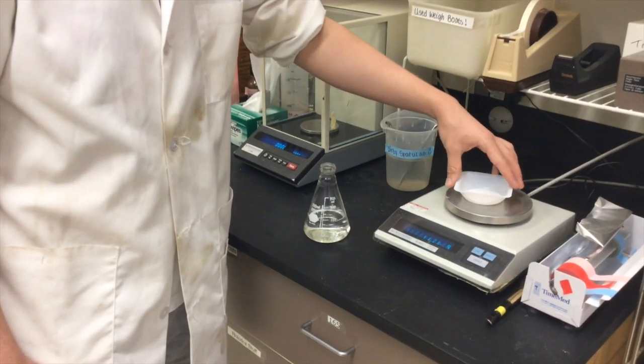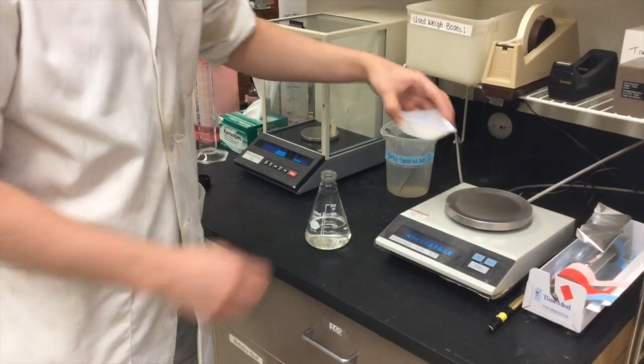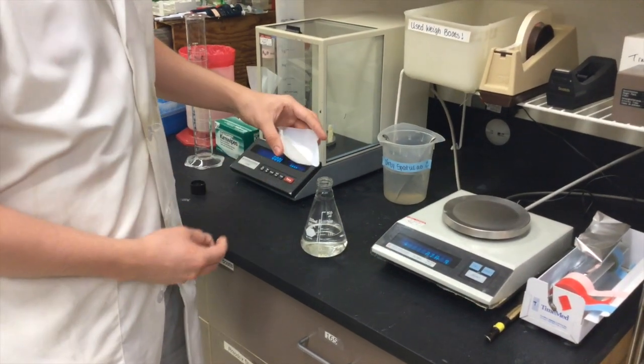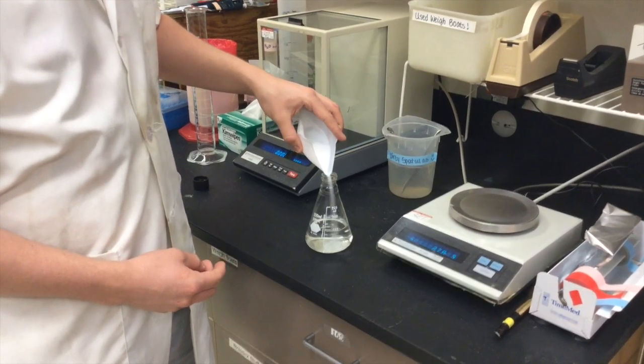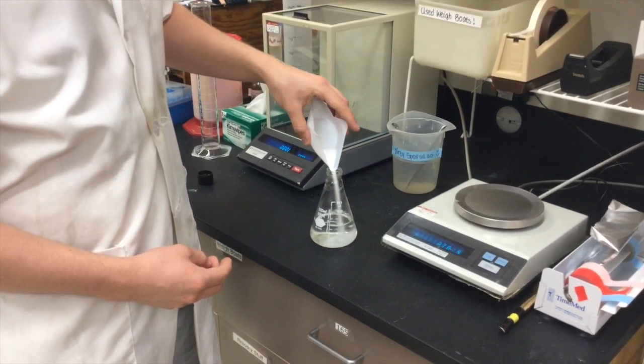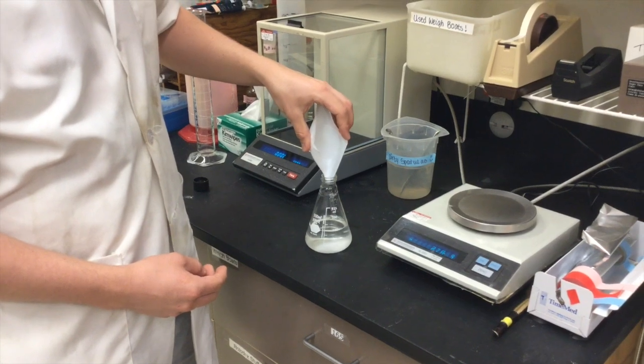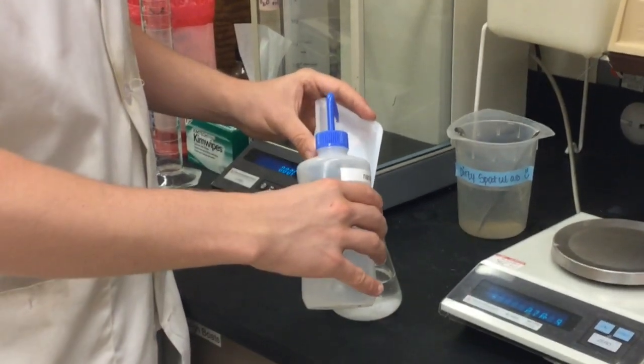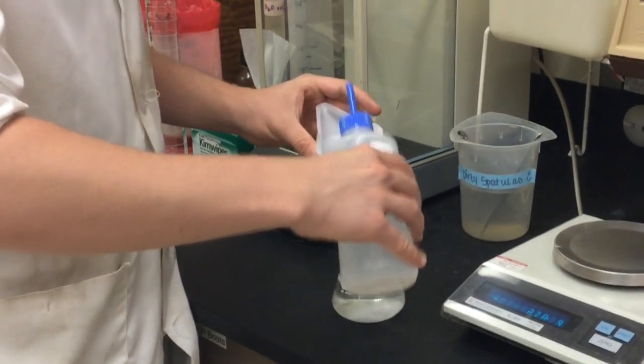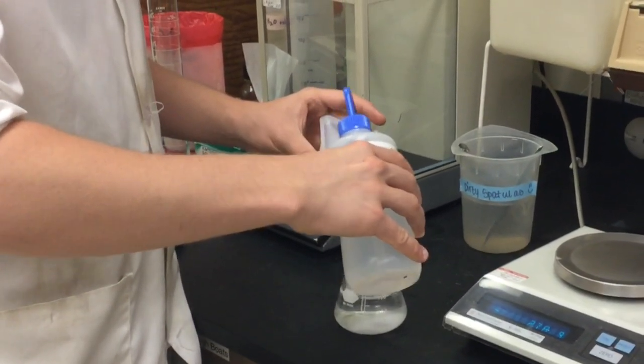Carefully pour the 11.69 grams of sodium chloride into the flask. Because this weigh boat is flexible, we are able to bend it and make it a funnel instead of having to use an actual funnel. Use the squirt bottle filled with nano-pure water to rinse the remaining sodium chloride crystals out of the boat and into the flask.